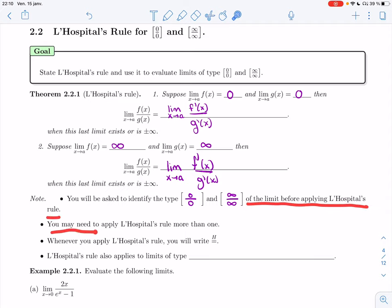You may need to apply L'Hopital's Rule more than once. Whenever you apply L'Hopital's Rule, you'll write equals H because it really looks like a completely different limit. So you have to tell me I'm using L'Hopital's Rule. That's going to make a much clearer argument.